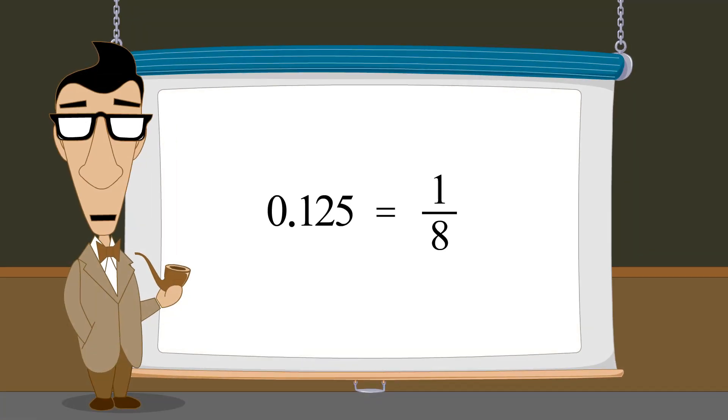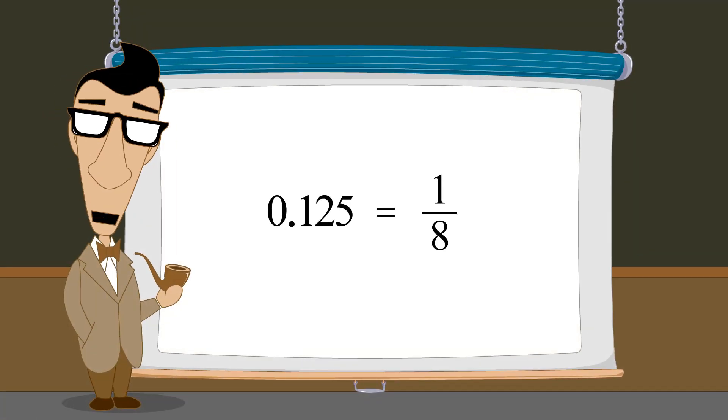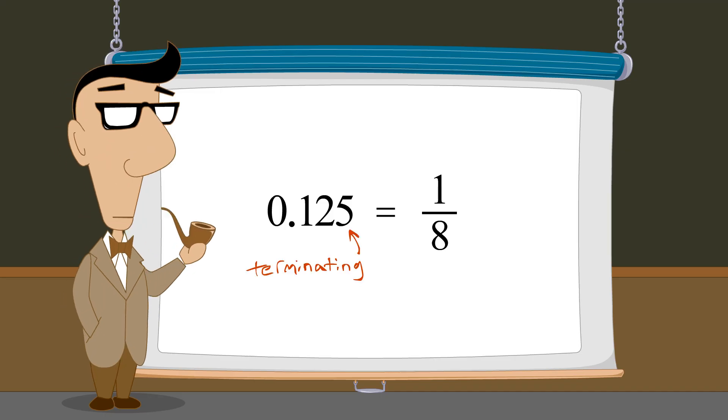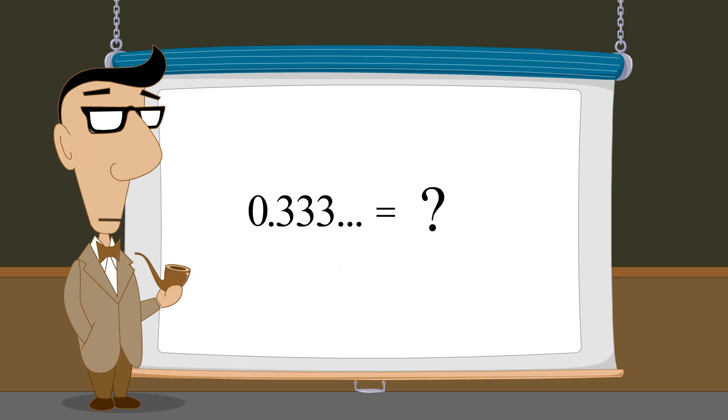So far we have seen how to convert any decimal number with a finite number of digits to a fraction. In the next lecture we will see how to convert any decimal number with infinitely repeating digits to a fraction.